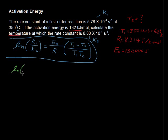The natural log of the rate constants. So we've got 5.78 times 10 to the negative 4th per second over 8.80 times 10 to the negative 4th per second.